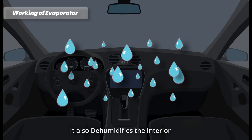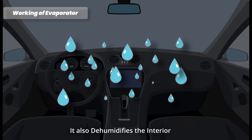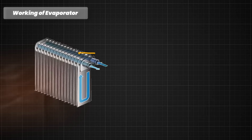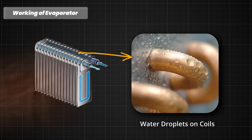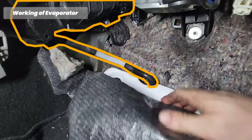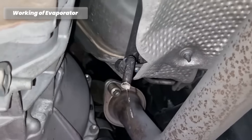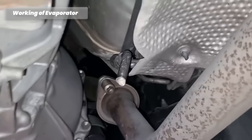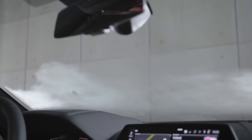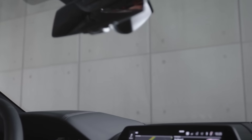In addition to cooling the air, the evaporator also plays a role in dehumidifying it. As warm air passes over the cold evaporator coils, moisture in the air condenses on the coils, forming water droplets. These water droplets are collected and drained out of the vehicle, reducing the humidity level inside the cabin and improving comfort, ensuring a comfortable, cool, and pleasant environment for the vehicle's occupants.